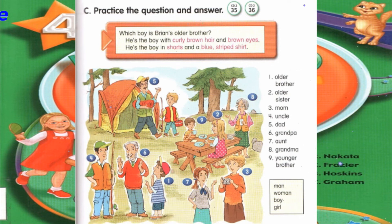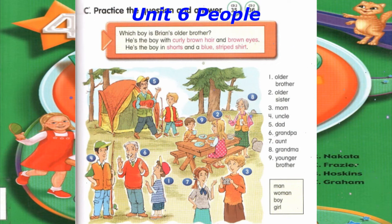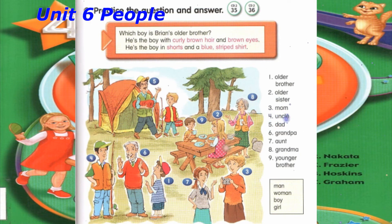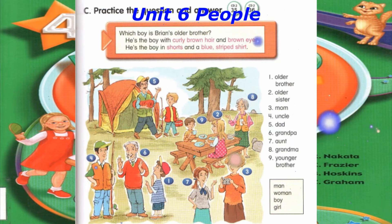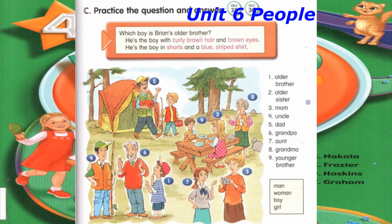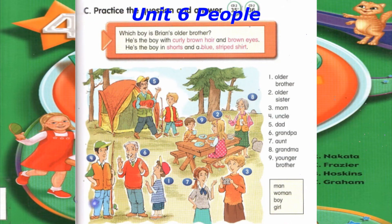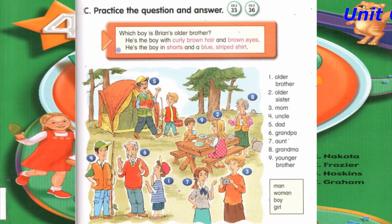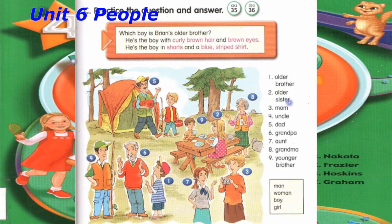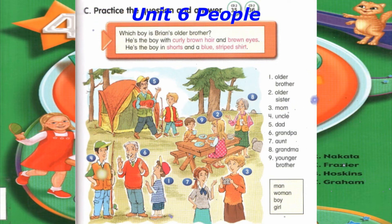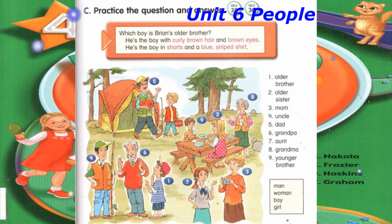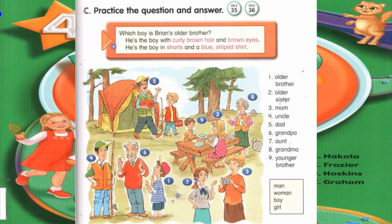Number 2: Which girl is Brian's older sister? She's the girl with long blonde hair. She's the girl in the pink polka dot dress and sandals. Number 3: Which woman is Brian's mom? She's the woman with blonde hair and gray eyes. She's the woman in the orange shirt and brown skirt. Number 4: Which man is Brian's uncle? He's the man with black hair and brown eyes. He's the man in the green baseball cap and green shirt.